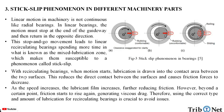This reduces the direct contact between the surfaces and causes the friction force to decrease. As the speed increases, the lubricant film increases further, reducing the friction. However, beyond a certain point, the friction starts to rise again, generating viscous drag. Therefore, using the correct type and amount of lubrication for recirculating bearings is crucial to avoid issues. Here in this figure we can see the stick-slip phenomena in the bearings.